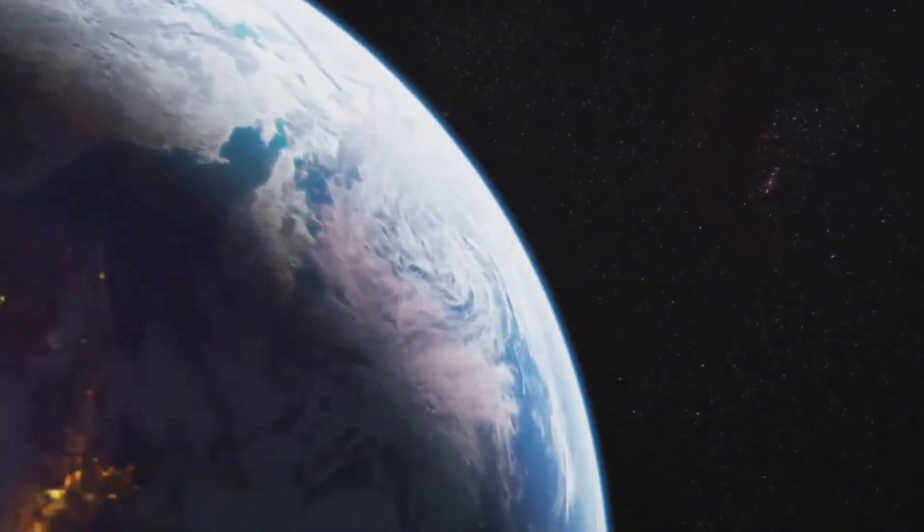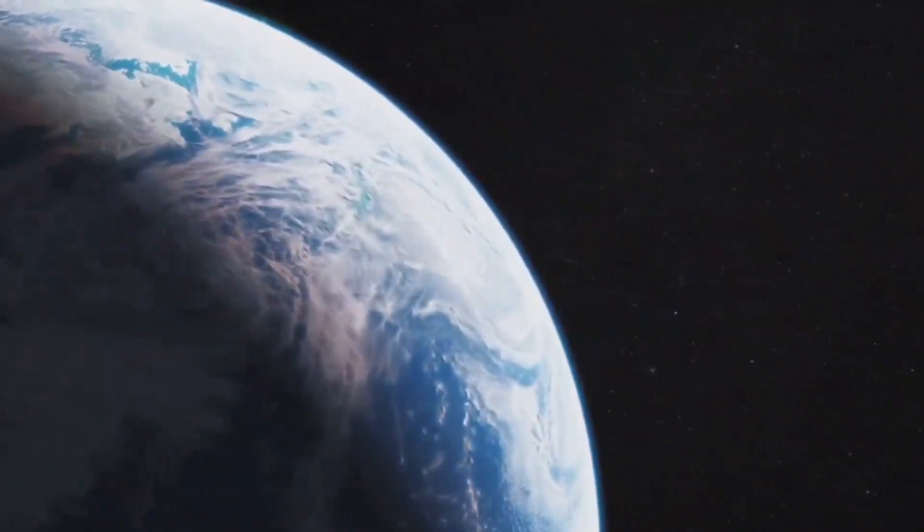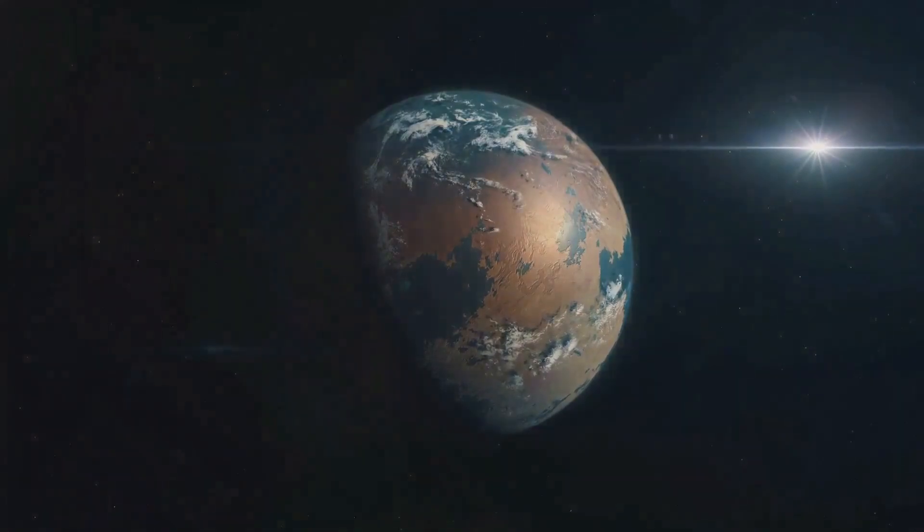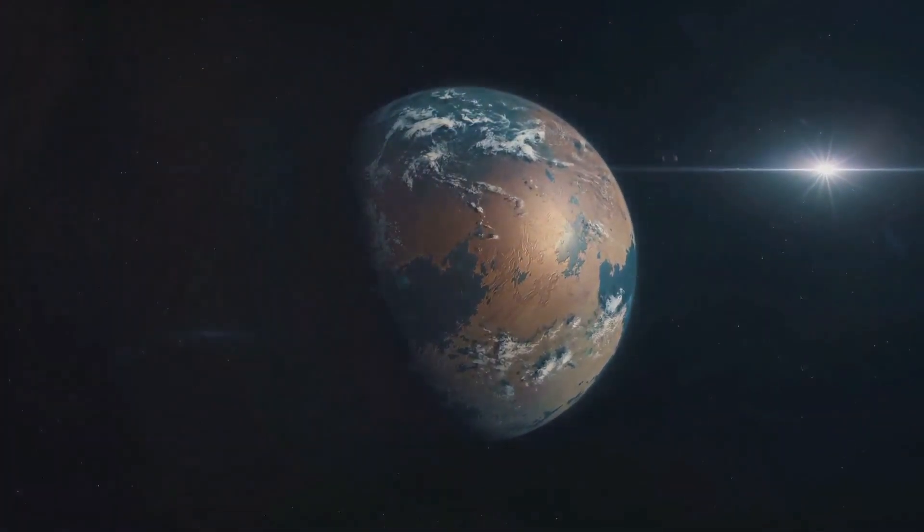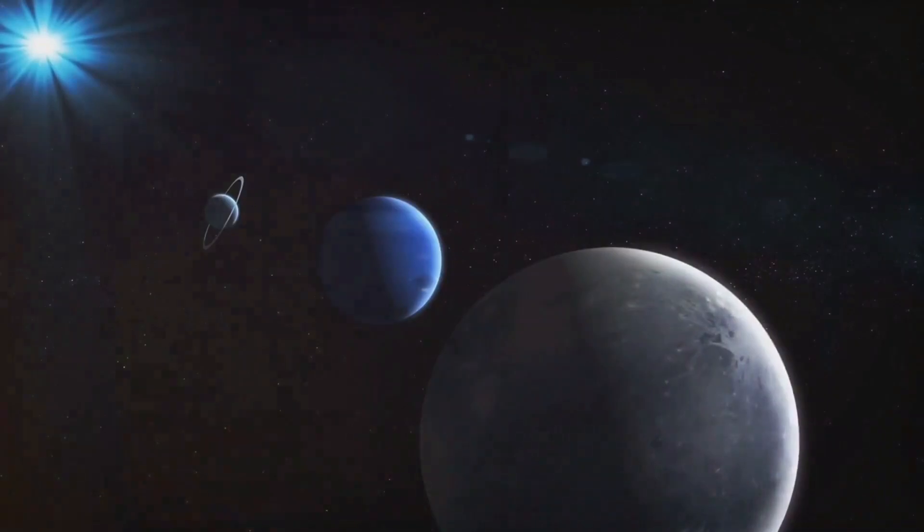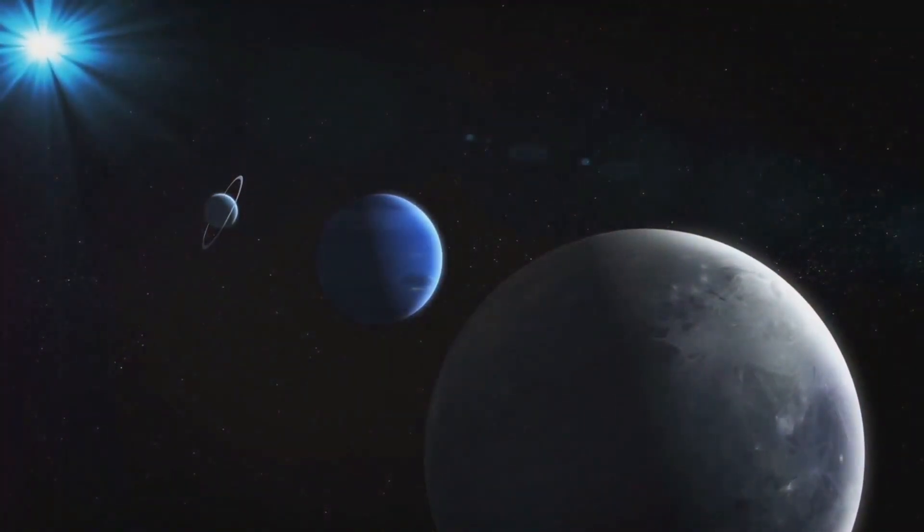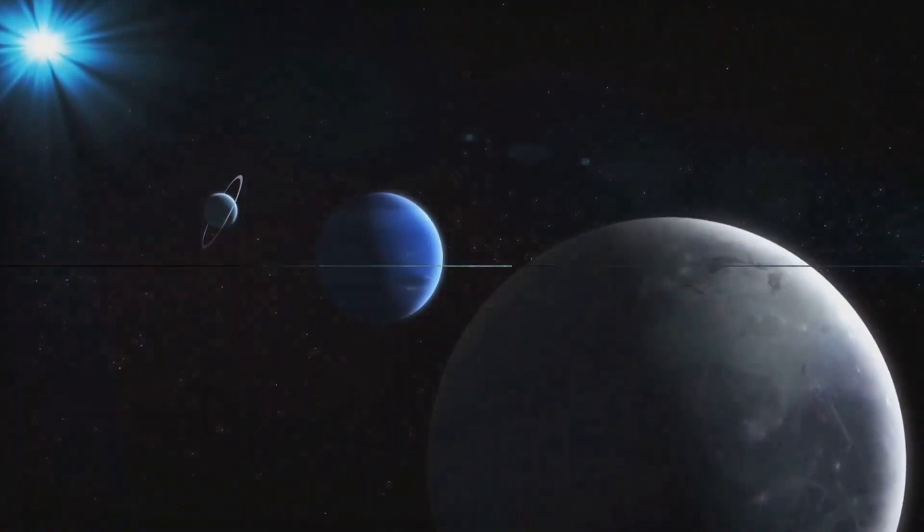Our first stop is Kepler-442b, a so-called Super Earth. This intriguing world orbits its star in the habitable zone, a region where conditions may be just right for life. Kepler-442b is larger than our home planet and its potential for liquid water and a stable climate sparks curiosity and hope.